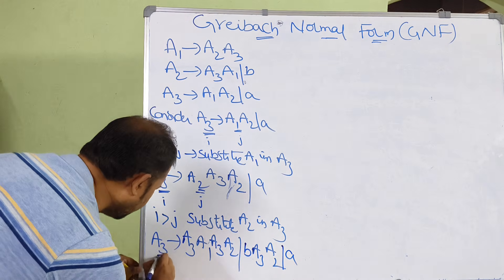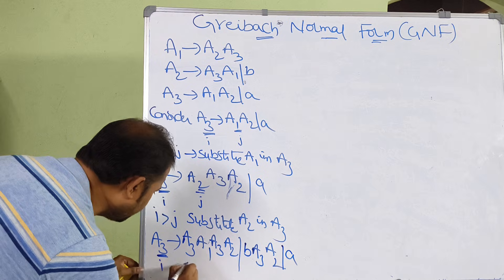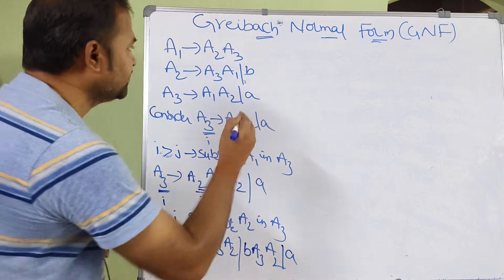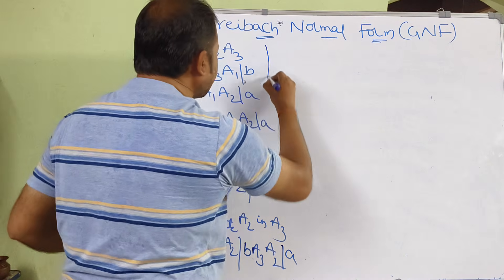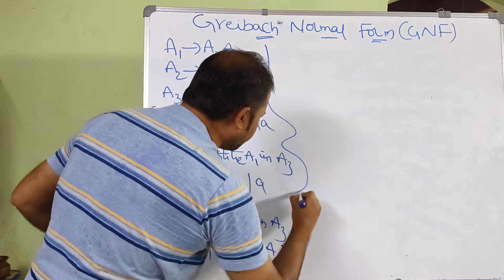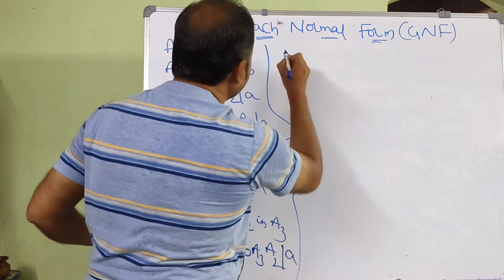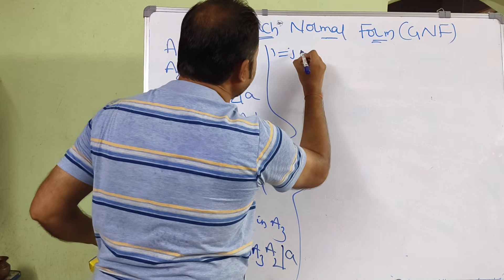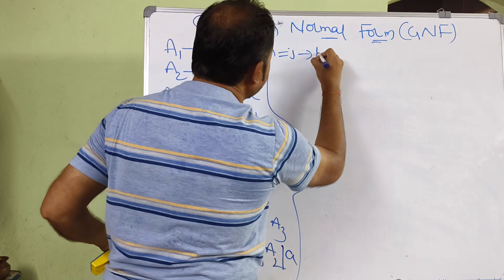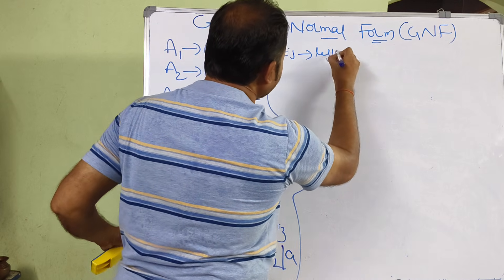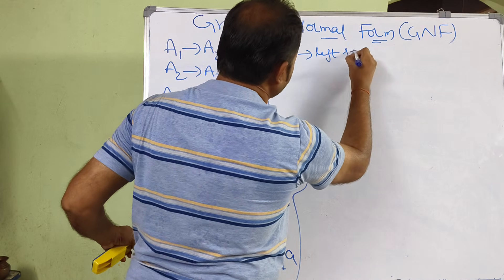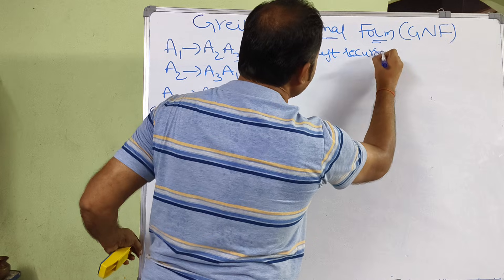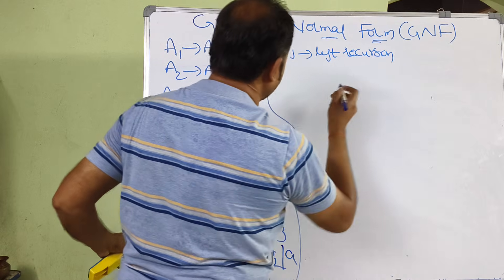If we observe here, I value is 3 and J value is also 3, which means I is equal to J. If I is equal to J, then the production has left recursion, so we need to eliminate the left recursion.